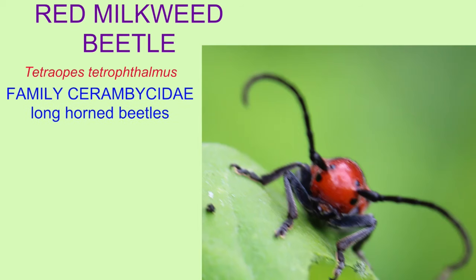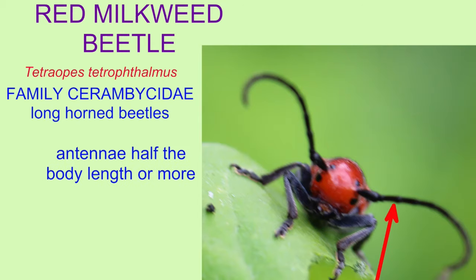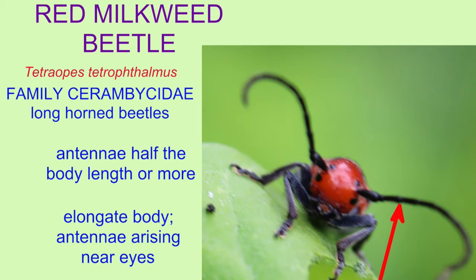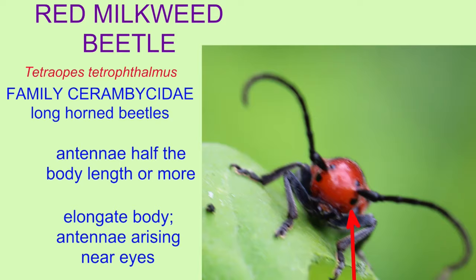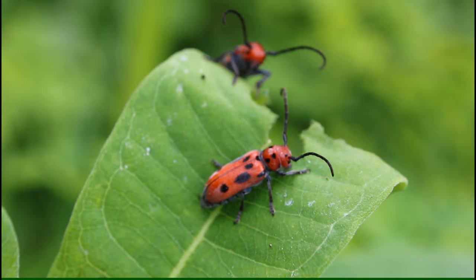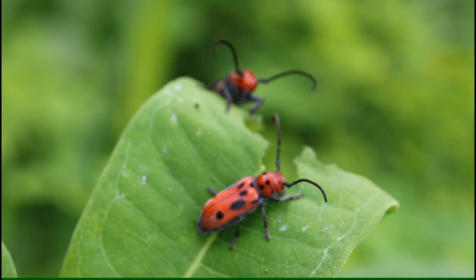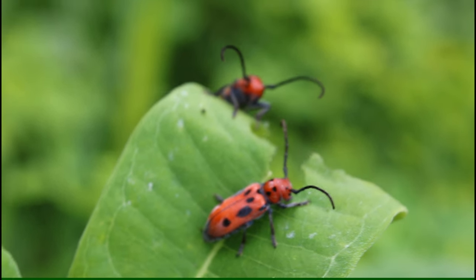These beetles are classified in the family Cerambycidae, the long-horned beetles, because their antennae are at least half the length of the body. In addition, like other long-horned beetles, they have an elongate body, and the antennae arise near the eyes, which typically are notched.